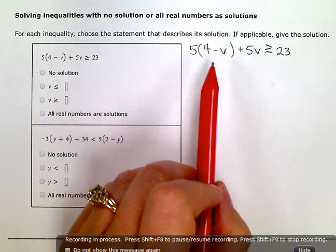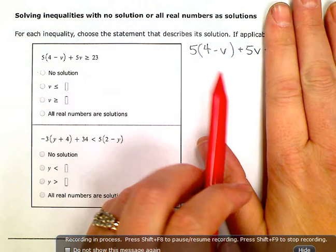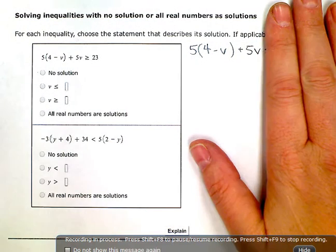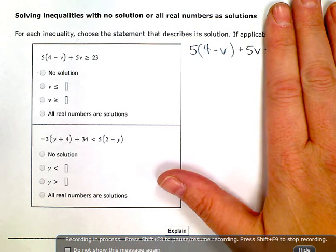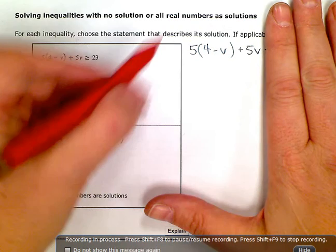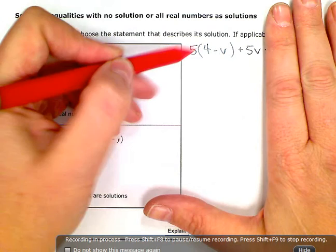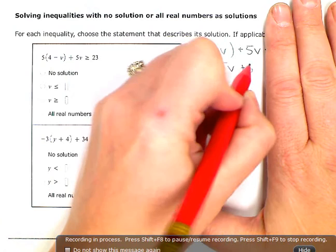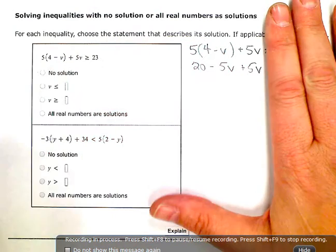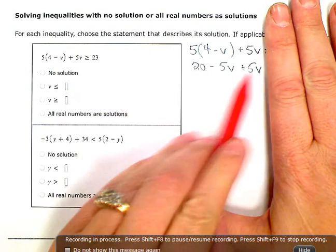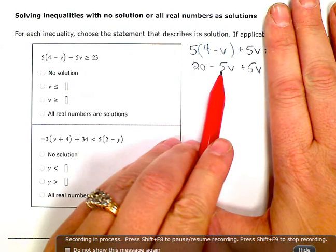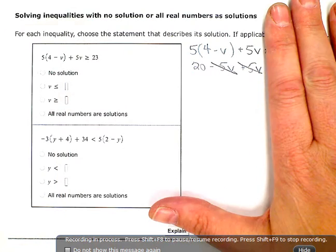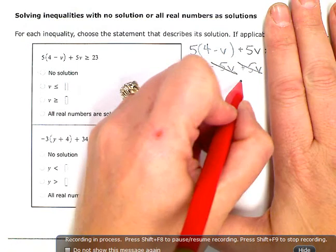So the first thing I'm going to do is look at each side of the inequality as individual little problems and just try to simplify if I can. So over here, if I distribute, I get 20 minus 5v plus 5v. And then I have two variable terms I can combine here, and minus 5v plus 5v. These two actually just zero each other out.